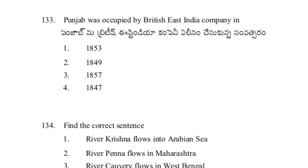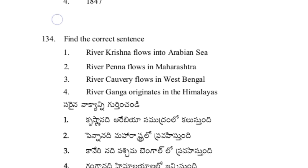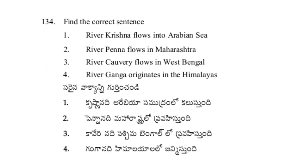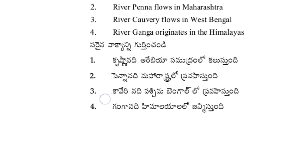Punjab was occupied by the British East India Company in option 2 — 1849. Find the correct sentence: River Ganga originates in the Himalayas — option 4, answer.